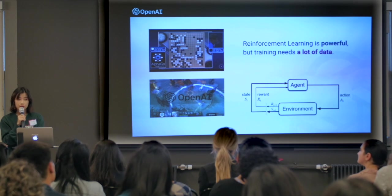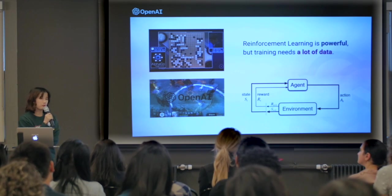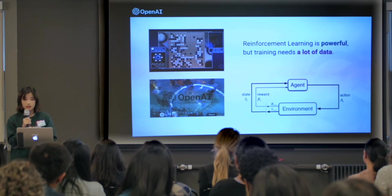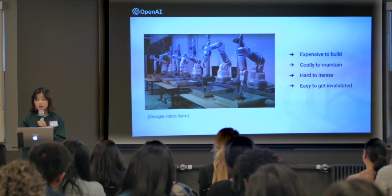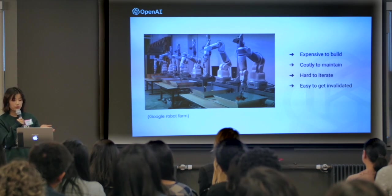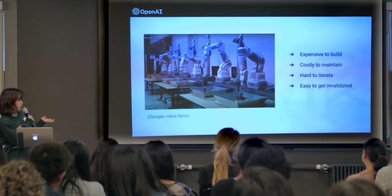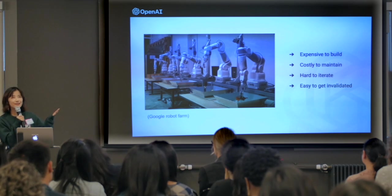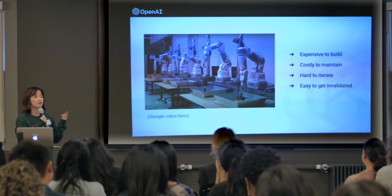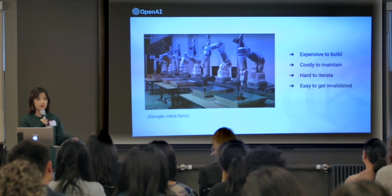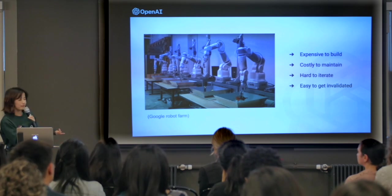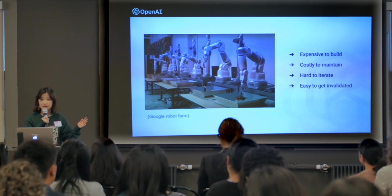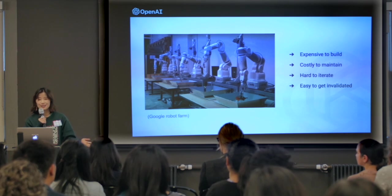Today most models are not data efficient — you need a lot of training samples to get a good model. One partial solution is to build a robot farm and collect data in parallel with hundreds of thousands of robots. But given how fragile robots can be, it is very expensive to build and maintain. And if you want to work on a new problem or with a new robot, it's very hard to change. Furthermore, your data can get invalidated very quickly due to small changes in robot status.